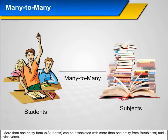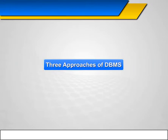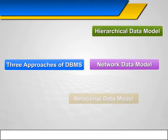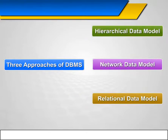Many-to-many: More than one entity from A (students) can be associated with more than one entity from B (subjects) and vice versa. Three approaches of DBMS: Hierarchical data model, Network data model, and Relational data model.